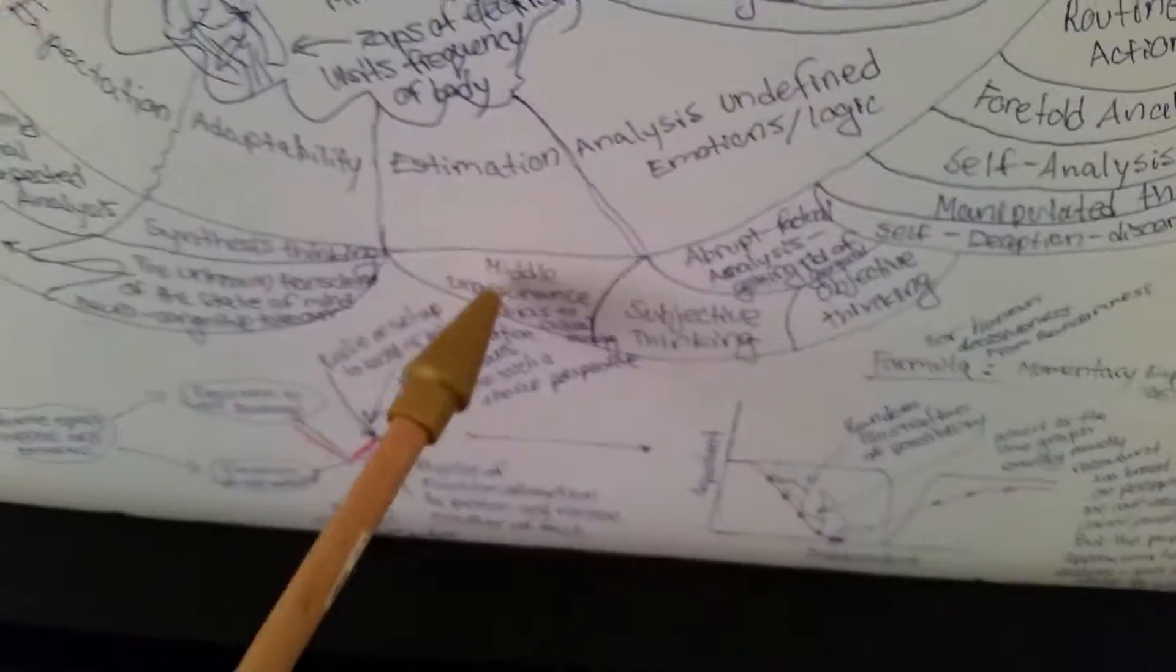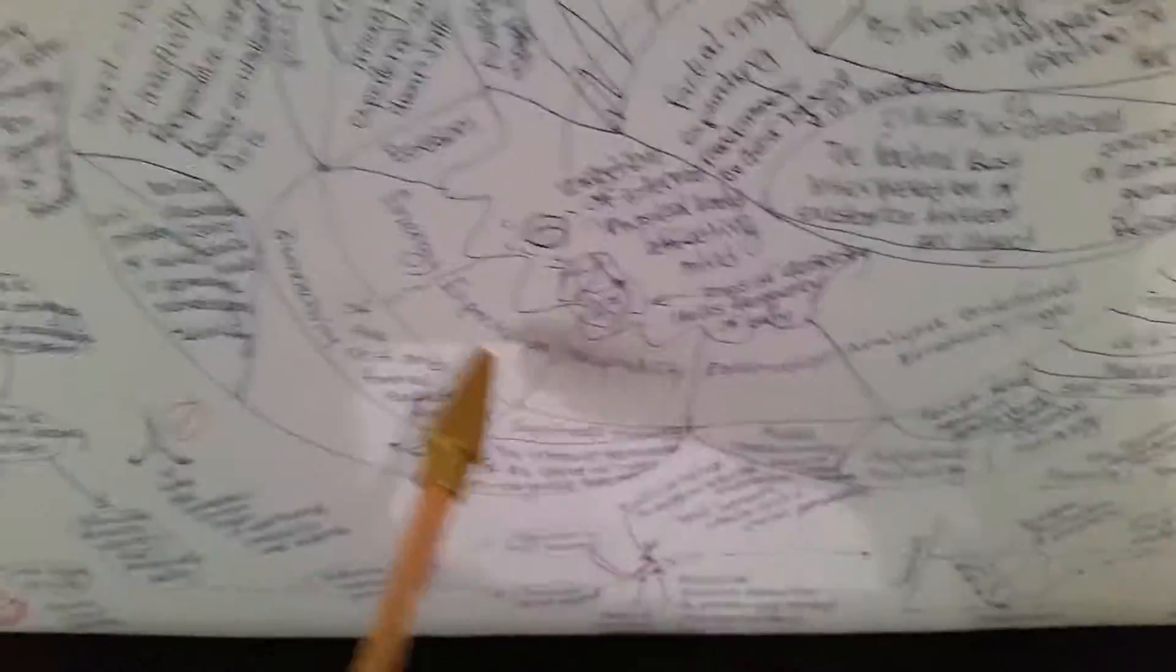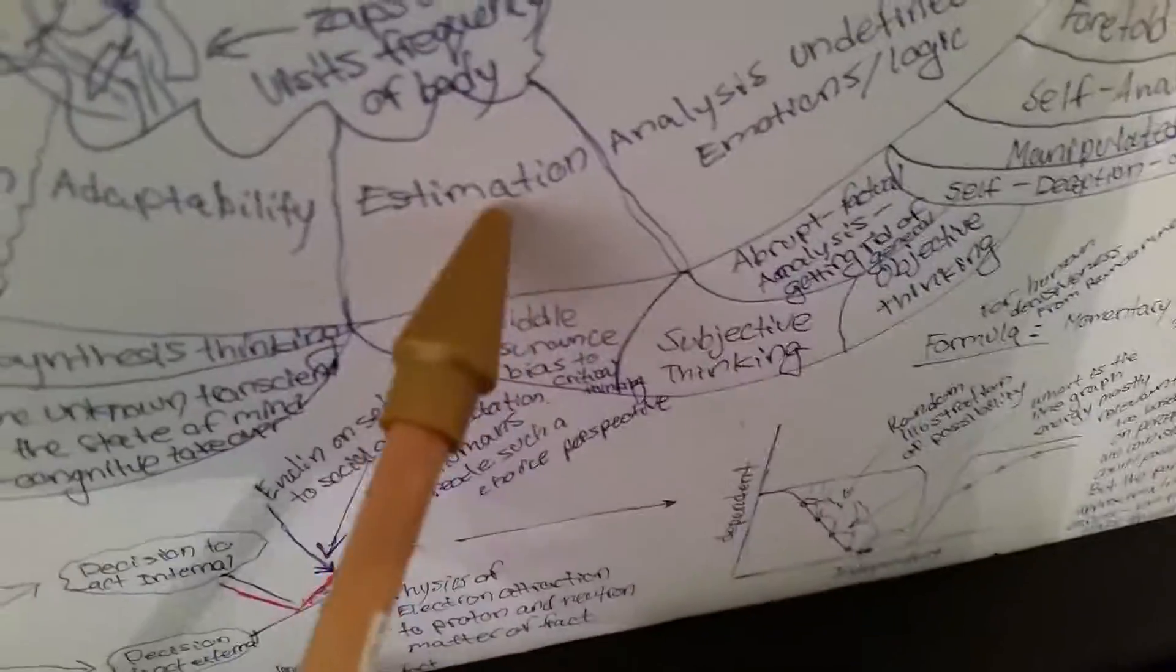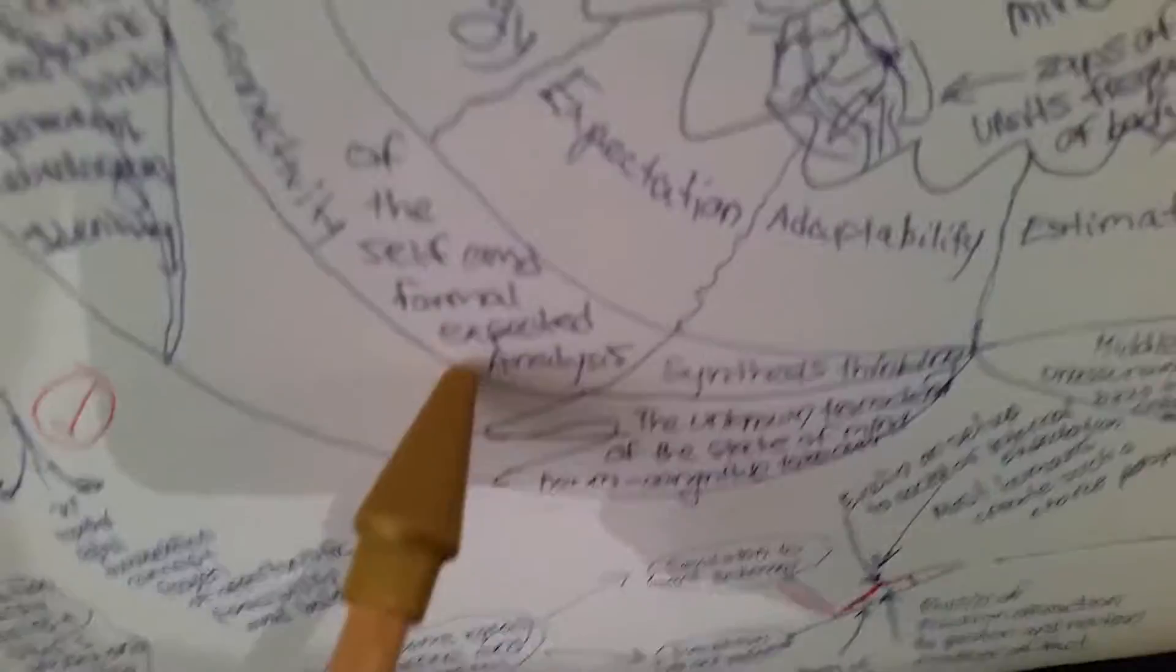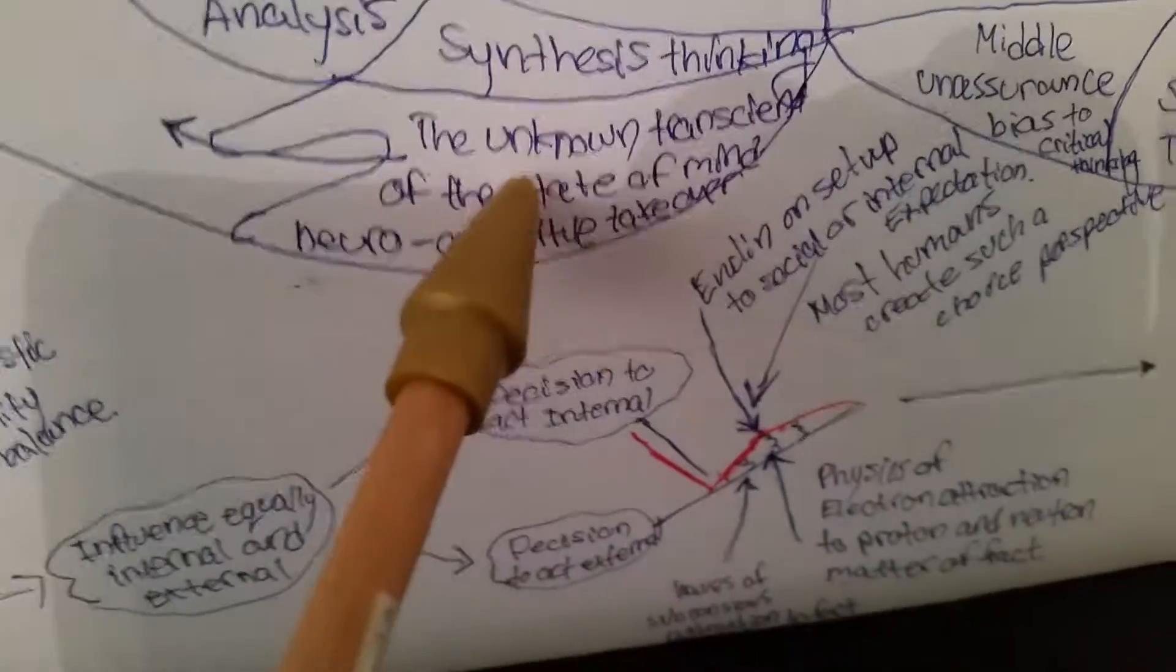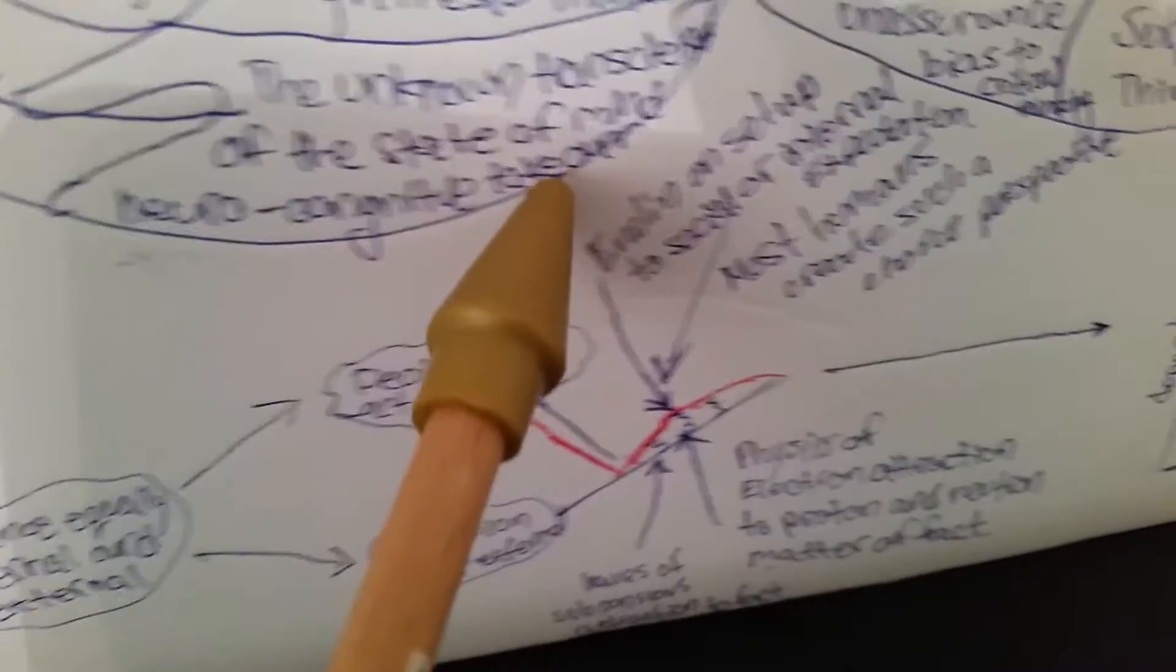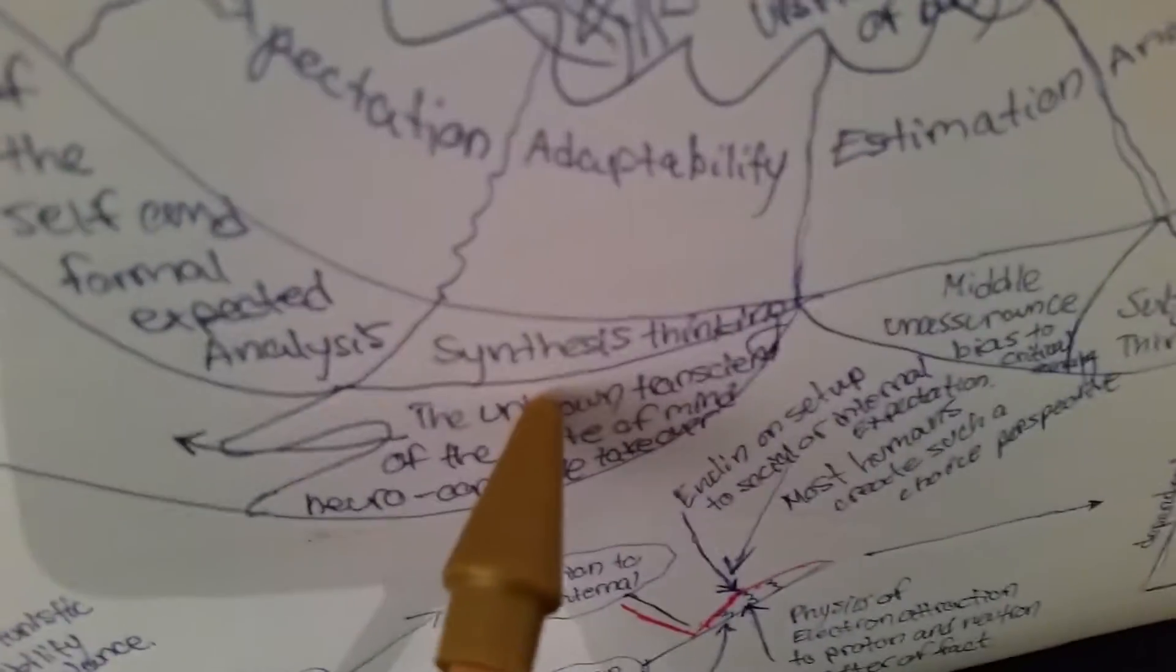Now we're going to go and we're going to go like, let's say we split our energy levels because we felt really down or something or very confused. So we go and we look at, let's say, energy disconnectivity of the self, informal expected analysis, synthesis thinking, the unknown foreseen of the state of mind, neuro-cognitive takeover. This, when a neuro-cognitive takeover happens, the lower you go on the brain, the harder it is going to be for you to recover. So you got to consider that.